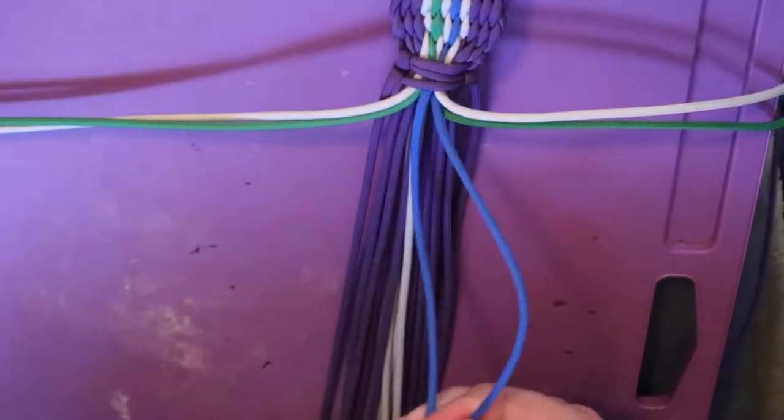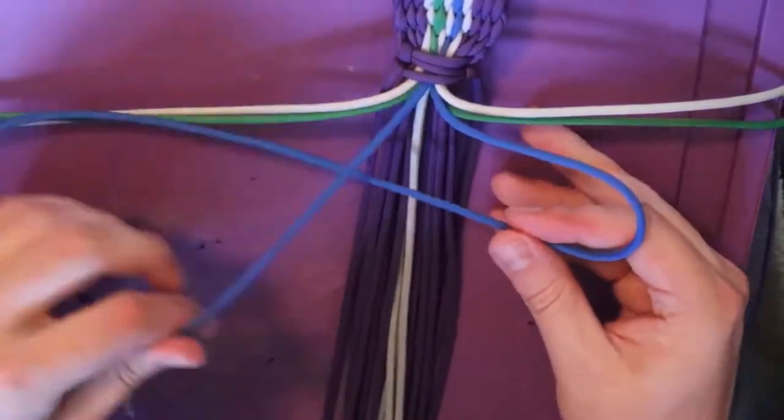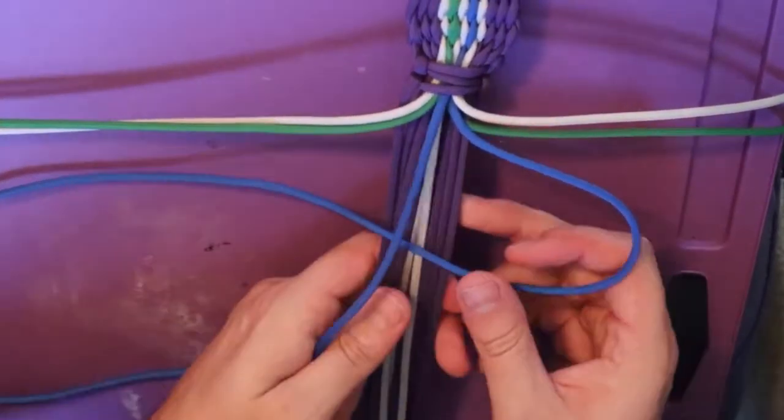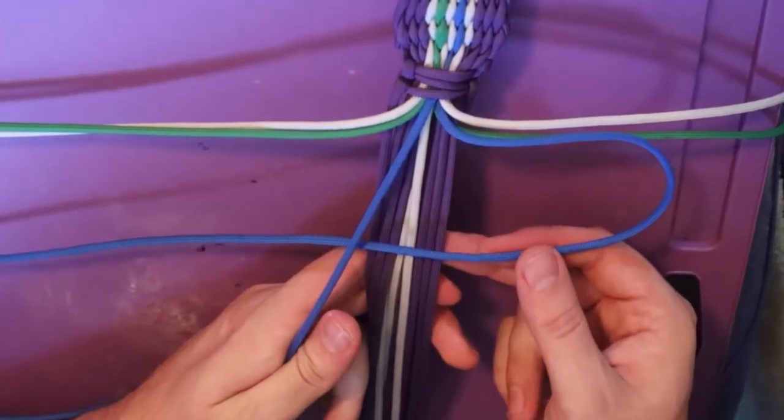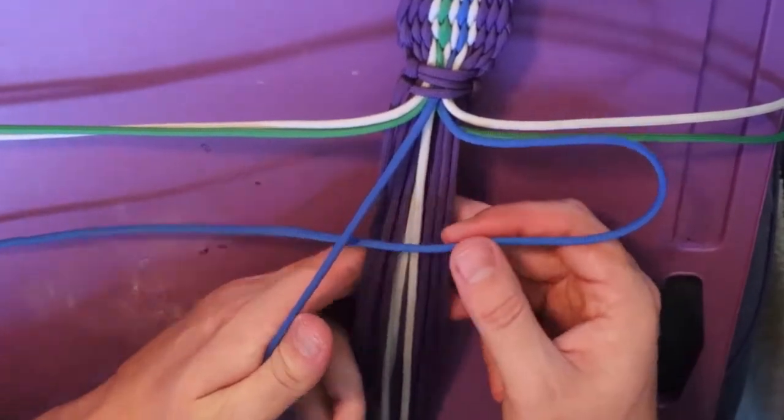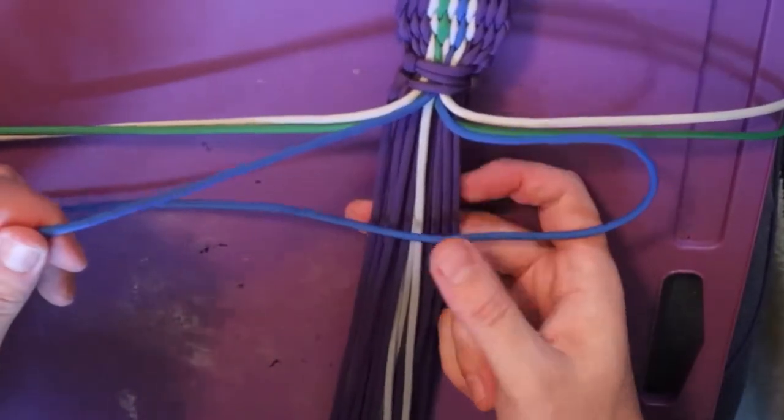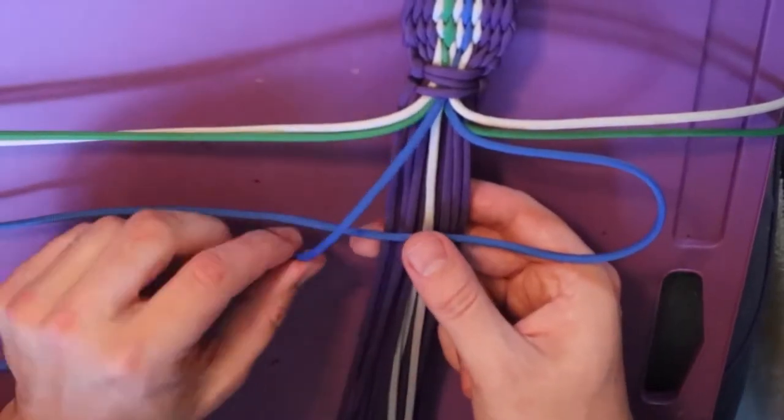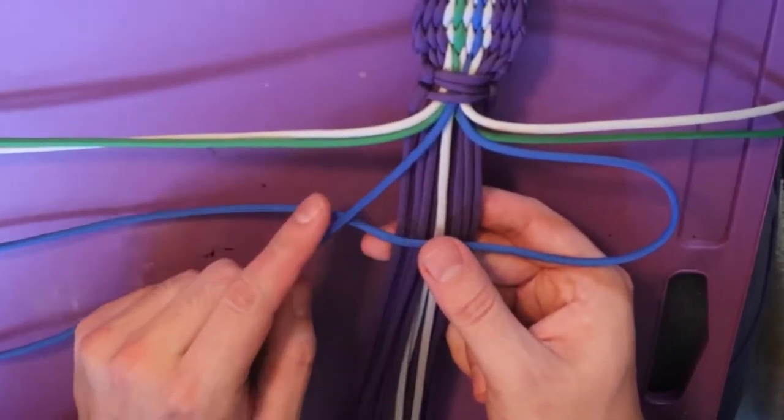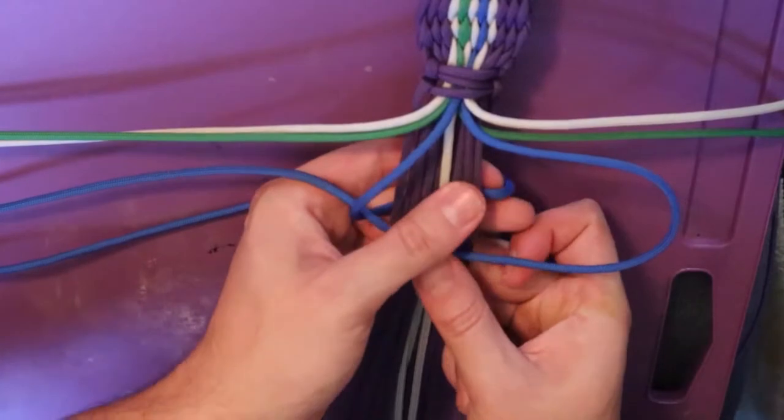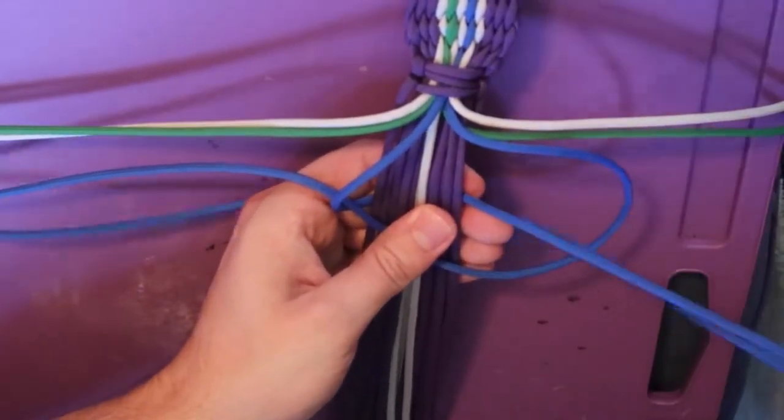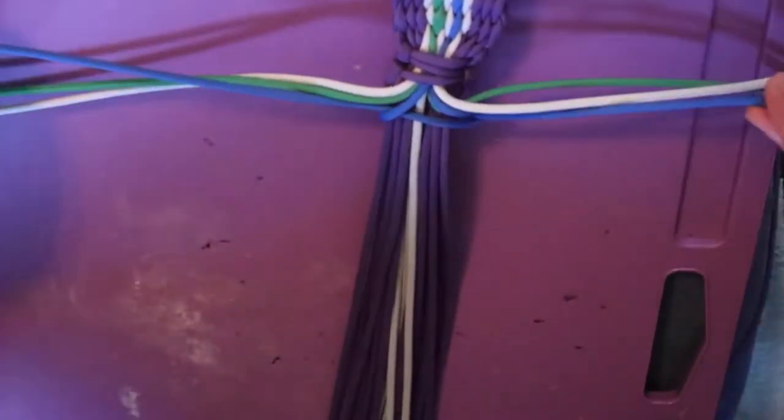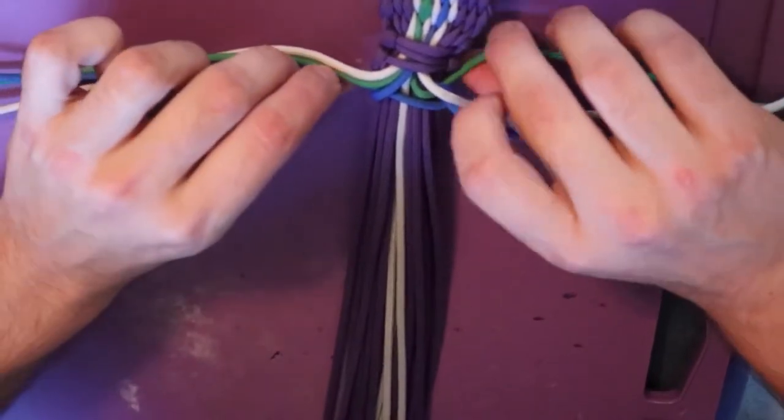So I'm going to take my blues. They're going over the other two and essentially I'm going to do half of a Solomon bar where I'm going to make it as a four. My right one is going to go over. My left one is going to go over that end of the four underneath it all and through the loop. And then I'm going to pull it tight.